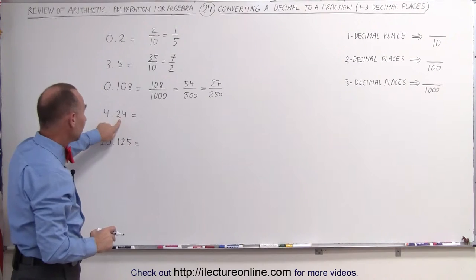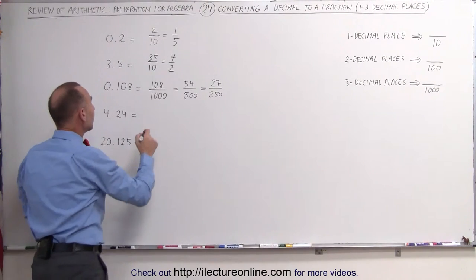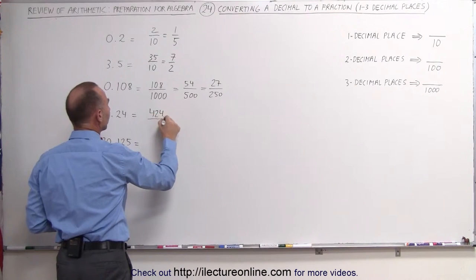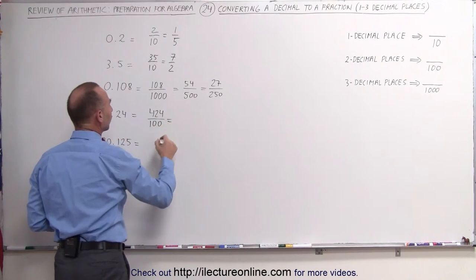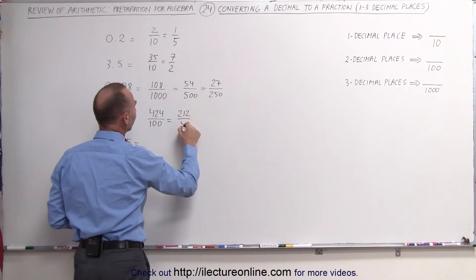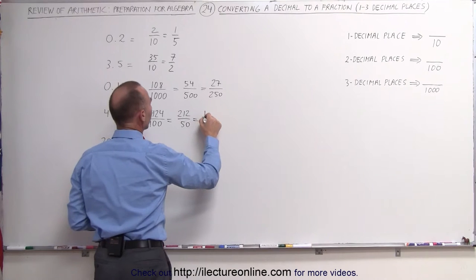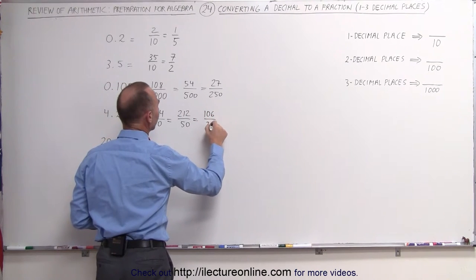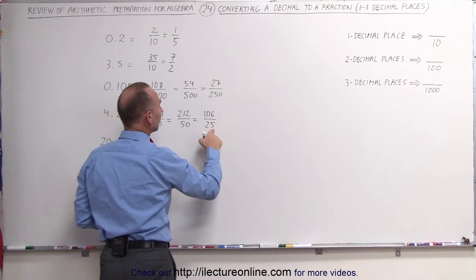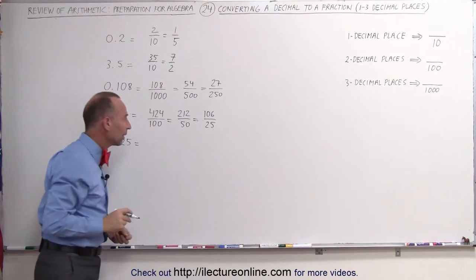4.24 — we have two decimal places here, so we write it as a fraction over 100. We get rid of the decimal point and write 424 divided by 100. Divide both the top and the bottom by 2 to get 212 divided by 50. We can do it again: that gives us 106 divided by 25. At this point it's no longer even and we can no longer divide, so that's as low as we can go.